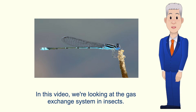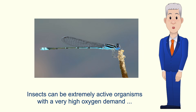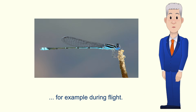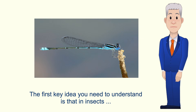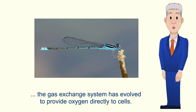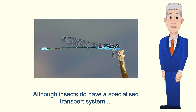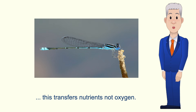In this video we're looking at the gas exchange system in insects. Insects can be extremely active organisms with a very high oxygen demand, for example during flight. The first key idea you need to understand is that in insects the gas exchange system has evolved to provide oxygen directly to cells. Although insects do have a specialized transport system, this transfers nutrients, not oxygen.